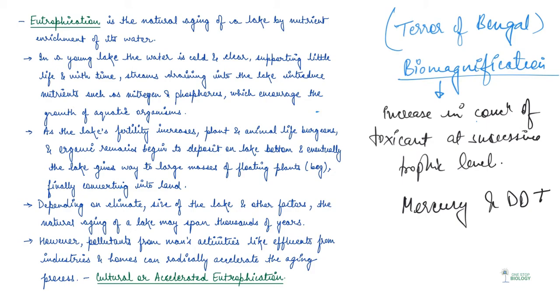And with warm water organisms, basically, there are lakes that start growing marsh plants. And then, ultimately, what happens is that you will see lake which gives way to large masses of floating plants. And finally, it gets converted into land. And we have studied this before as well. Now, depending on climate, size of the lake, and there are various factors because of which there is natural aging of lake. Now, this may happen in thousands of years.